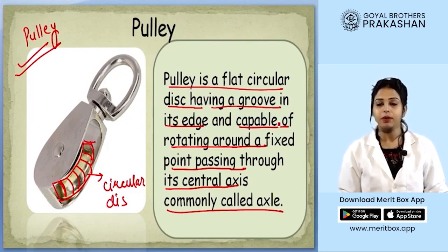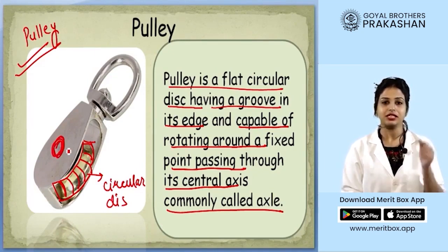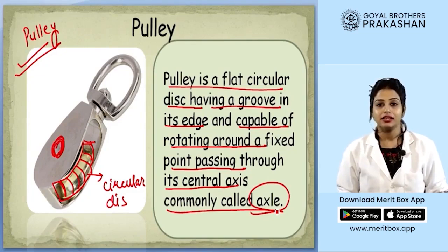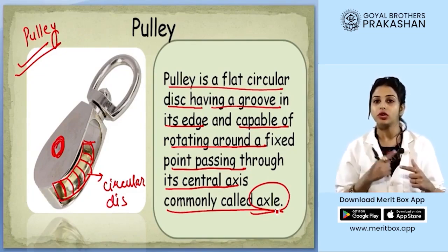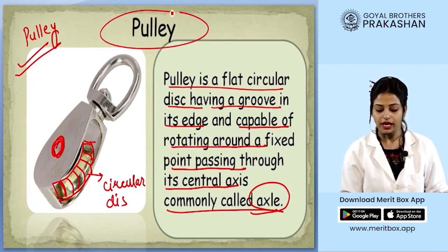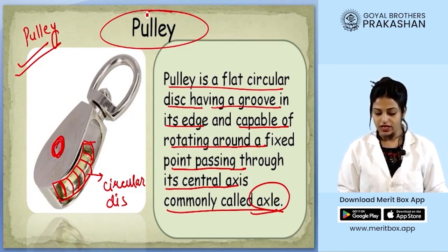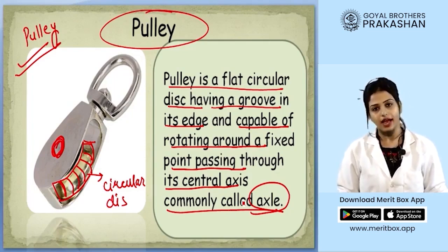The pulley is capable of rotating. Here you can see there is a nut in the center of the circular disc — this acts as the axle. This axle makes it possible for the circular disc to rotate around it. This system is defined as the pulley. Let's repeat: Pulley is a flat circular disc having a groove in its edge and capable of rotating around a fixed point passing through its central axis, commonly called as axle.